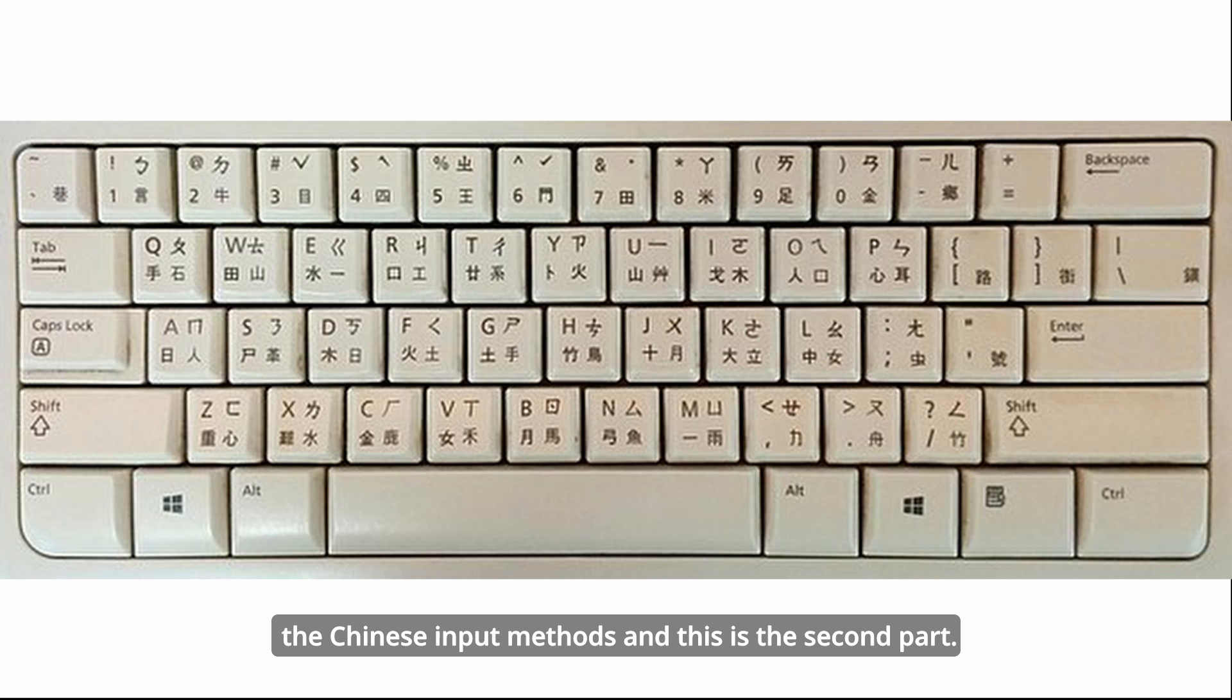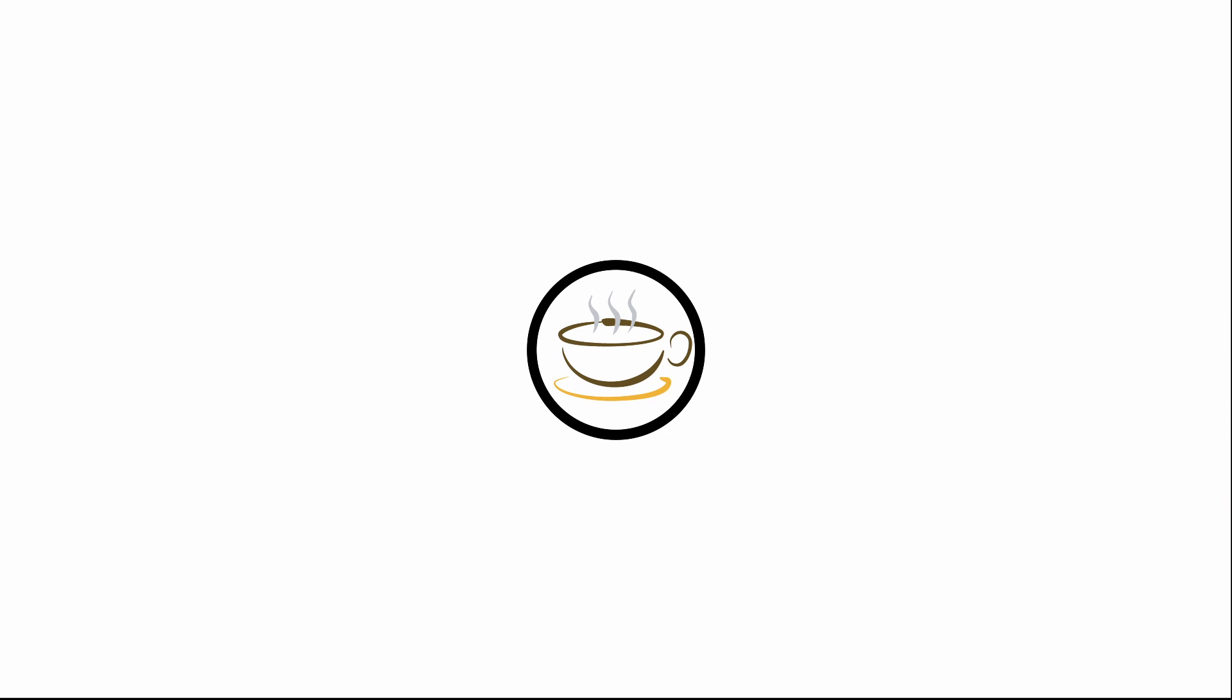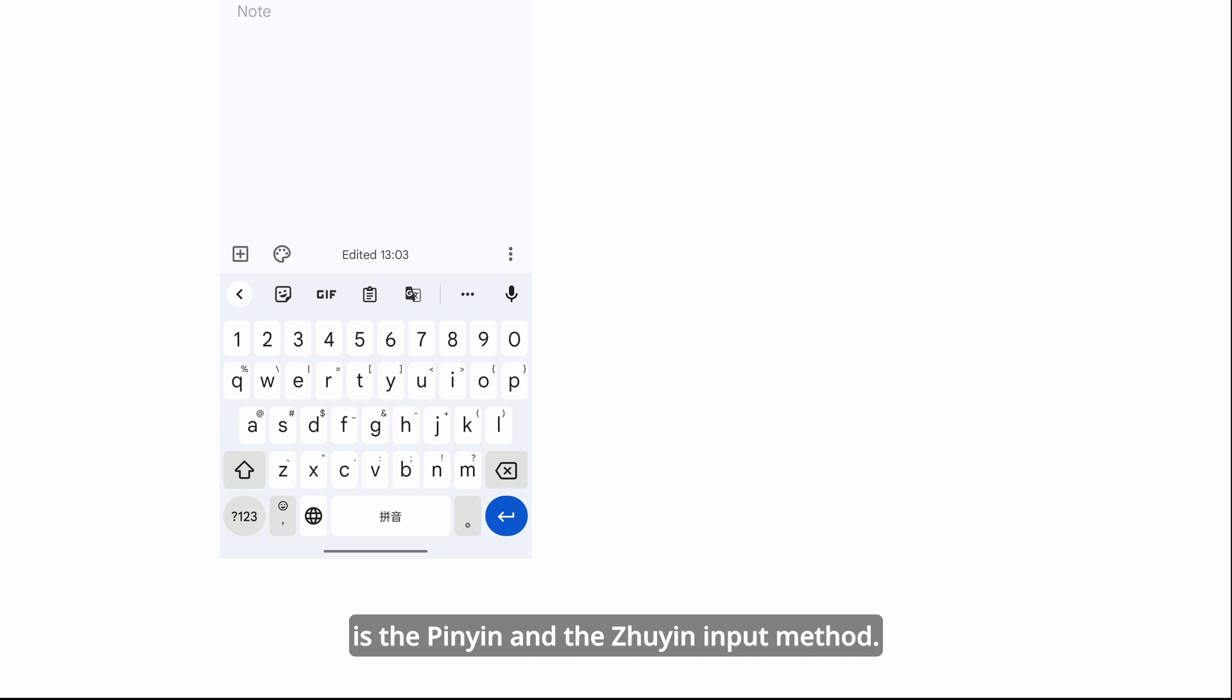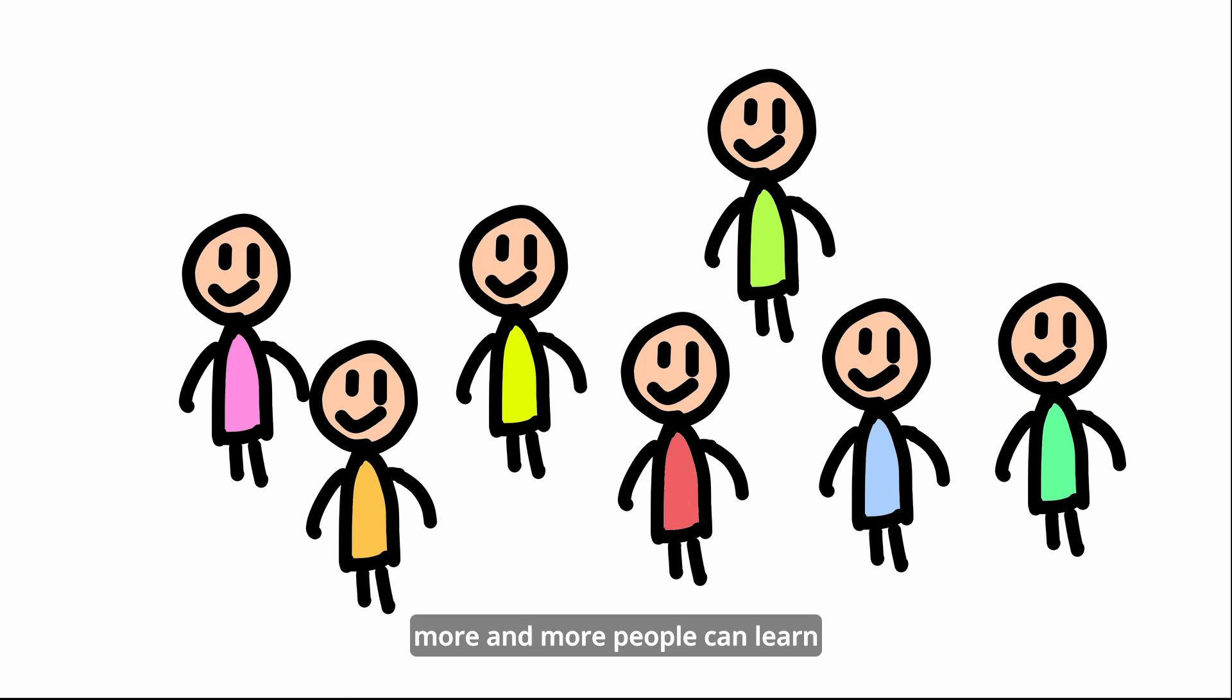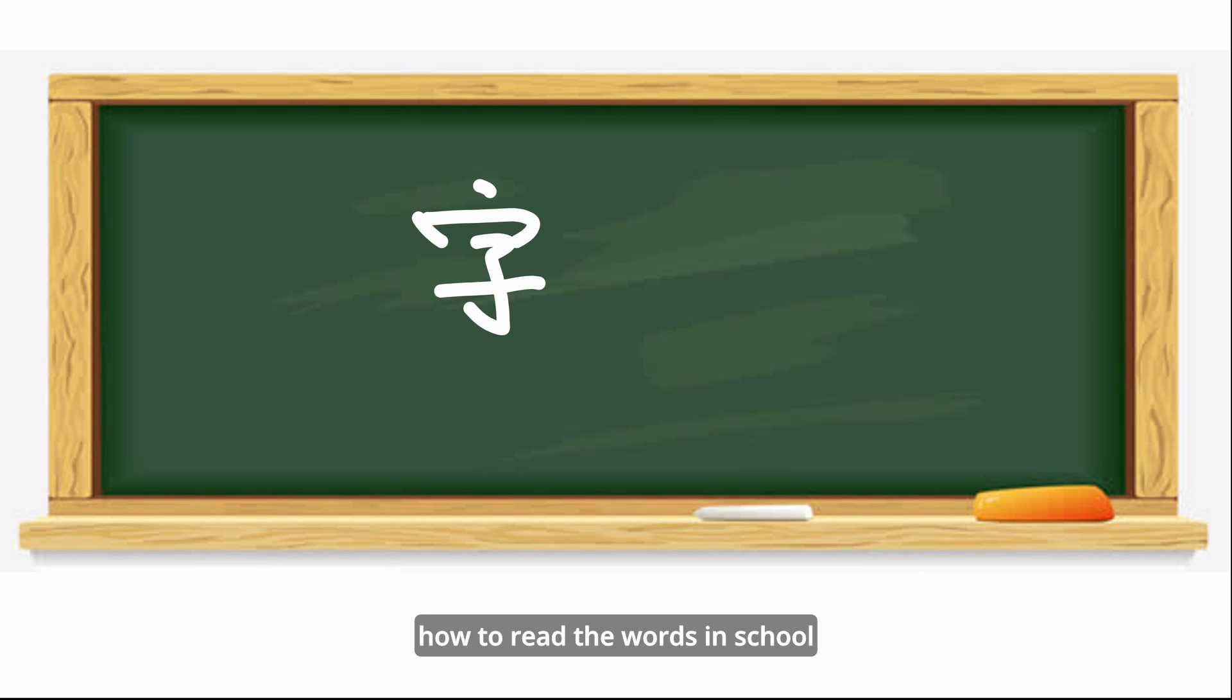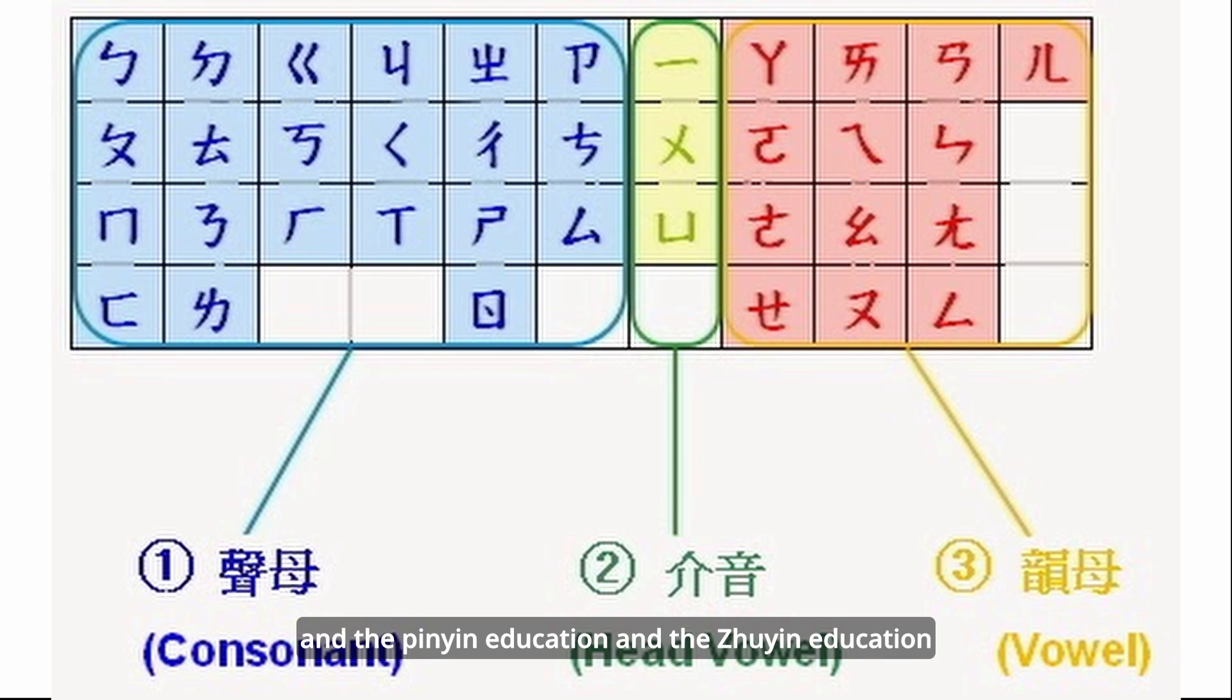Hey guys, welcome back. Today let's continue talking about the Chinese input method. This is part two. The first one is pinyin and the Zhuyin input method. Because basic education was popularized in society, more and more people can learn how to read words in school from their childhood. The pinyin education and Zhuying education both are the foremost ways to teach children.